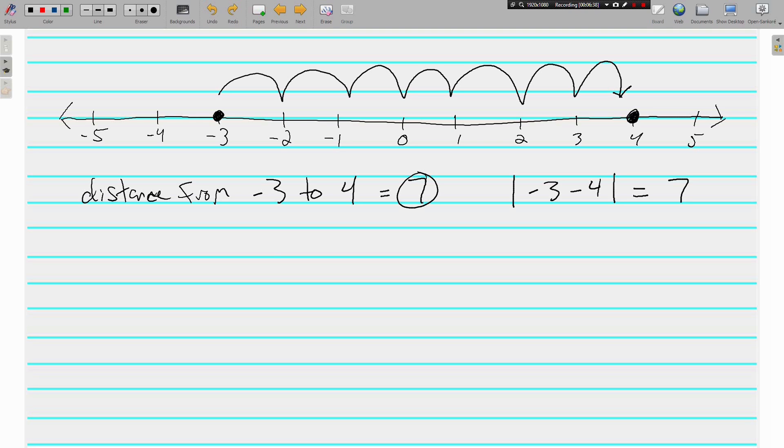And the other way from 4 to negative 3. One, two, three, four, five, six, seven. And this time, I have the absolute value of 4 minus negative 3. I put the negative 3 in parentheses because I don't like there being two negative signs or two minus signs right next to each other. So this is just 4 minus negative 3. And again, it's the absolute value. And we have 7.